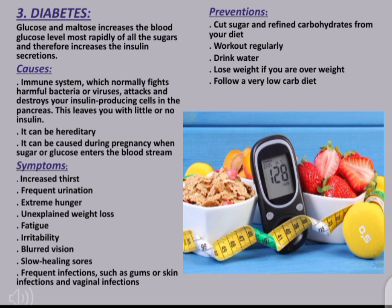Symptoms of diabetes include increased thirst, frequent urination, extreme hunger, unexplained weight loss, fatigue, irritability, blurred vision, slow healing sores, and frequent infections such as gum, skin, or vaginal infections. Prevention involves cutting sugar and refined carbohydrates from your diet, working out regularly, drinking water, losing weight if overweight, and following a very low carb diet.